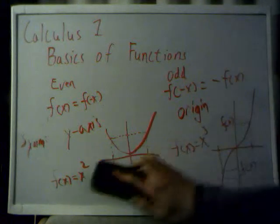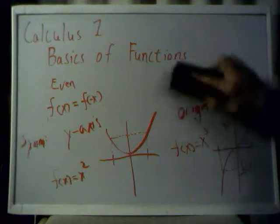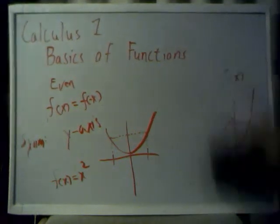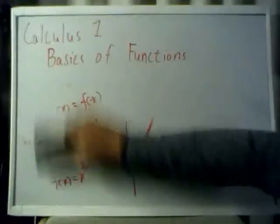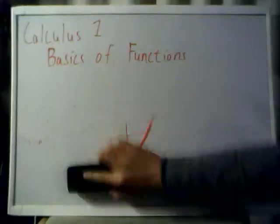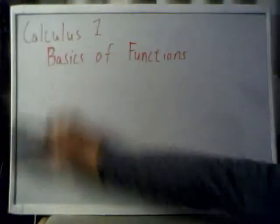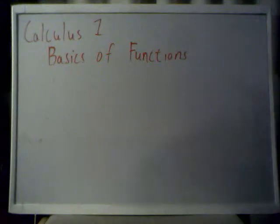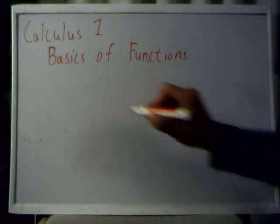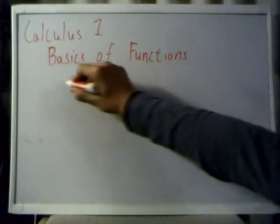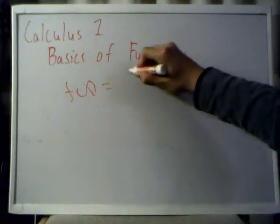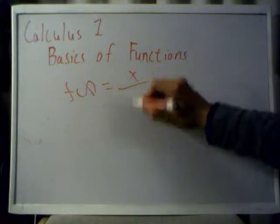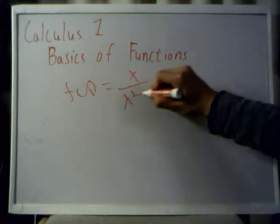Now, these are simple examples, but what if, say, you want to do an example problem to see if a function is even or odd. If I were to give you a random function, without graphing it, how would you know if it's even or odd? Well, it's not that complicated. Let's say f of x is equal to x over x squared plus 1.